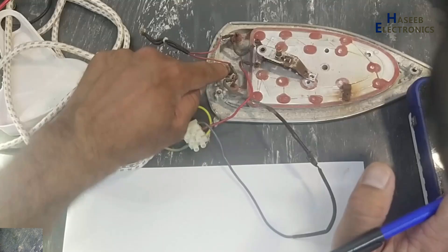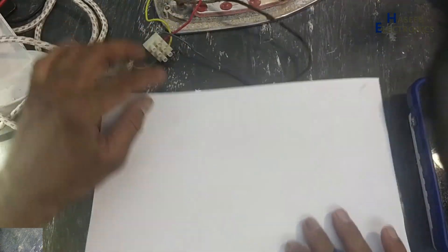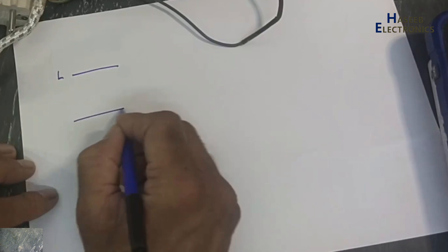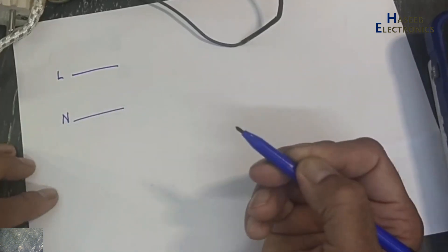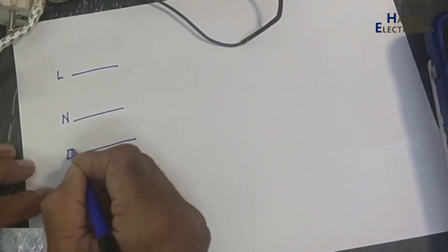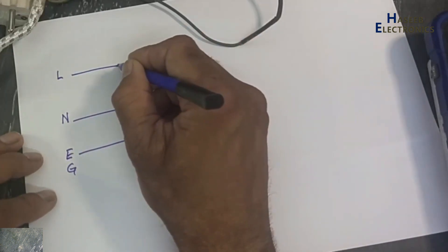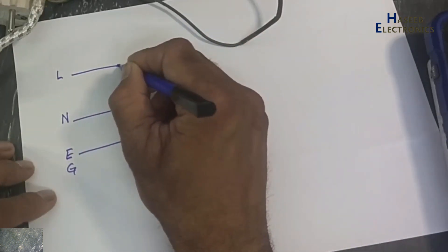Earthing wire is connected to the chassis. Let's draw on paper: line, neutral, earthing or ground. Line voltage is reaching to the thermostat.